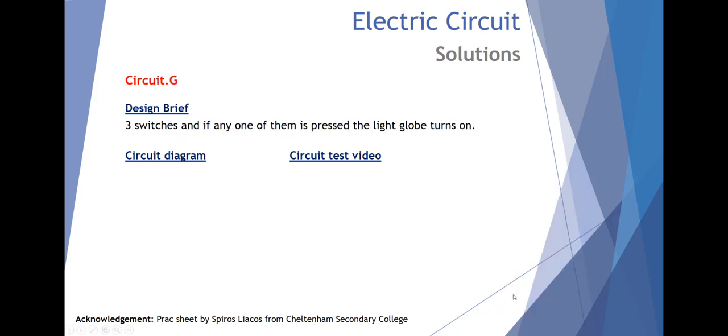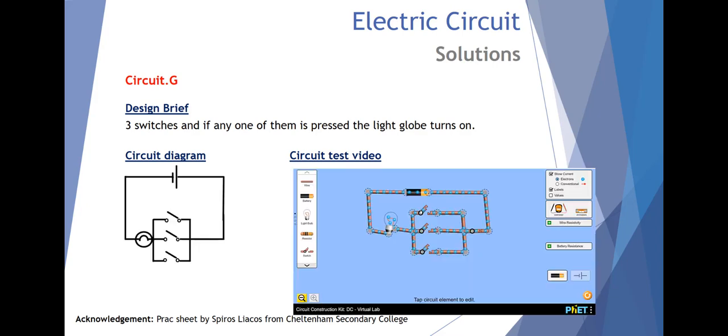Circuit G, three switches and if any one of them is pressed the light globe turns on. Switch one, switch two and switch three.